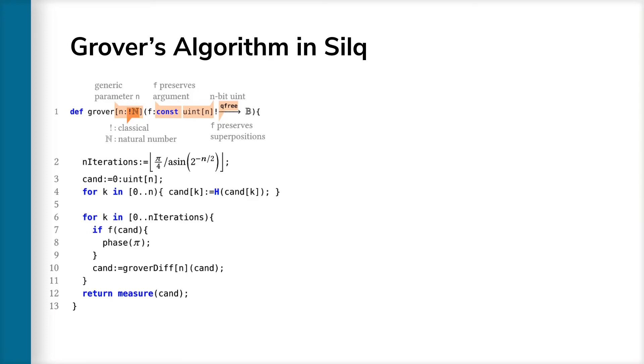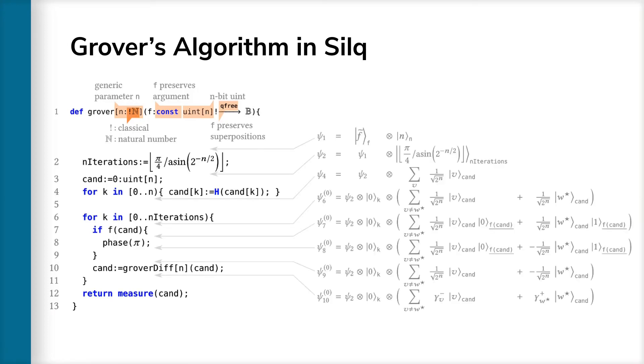To give you a feeling for Grover's algorithm, we now show its full body and the quantum states it produces during the first iteration of its loop. Here, however, we only discuss one key aspect of Grover's algorithm, which demonstrates its automatic uncomputation. For a discussion of the remainder of Grover, we refer to our publication.